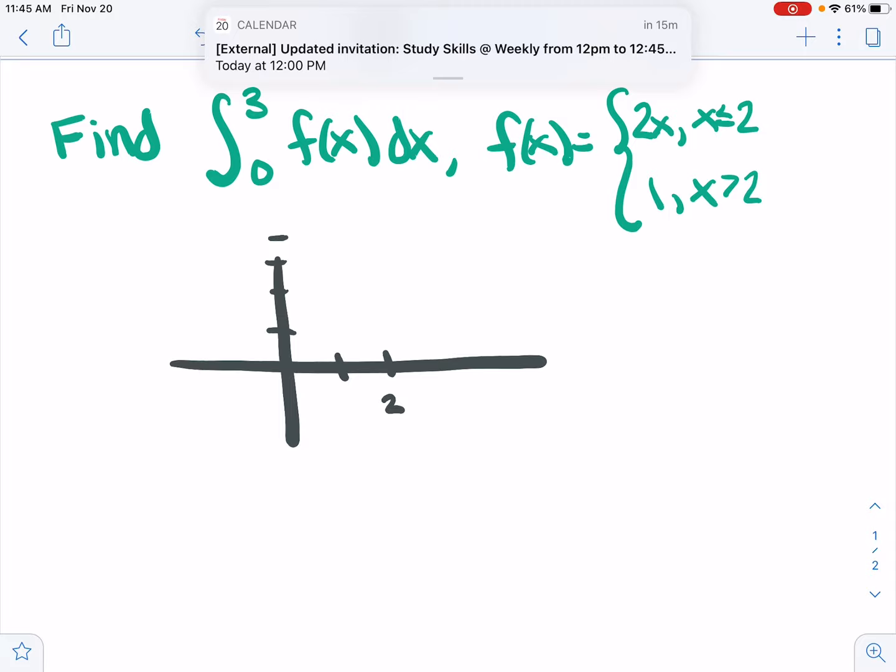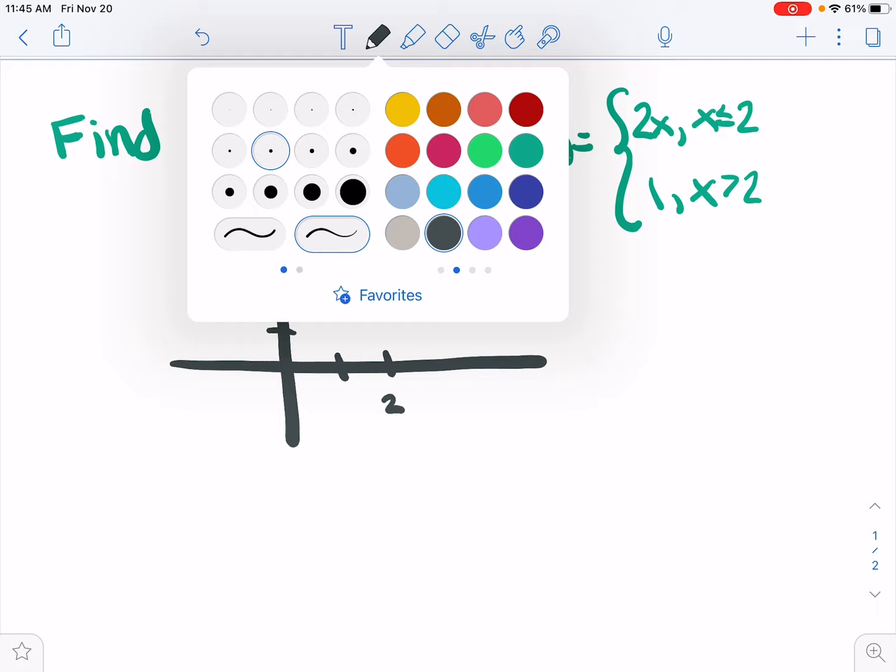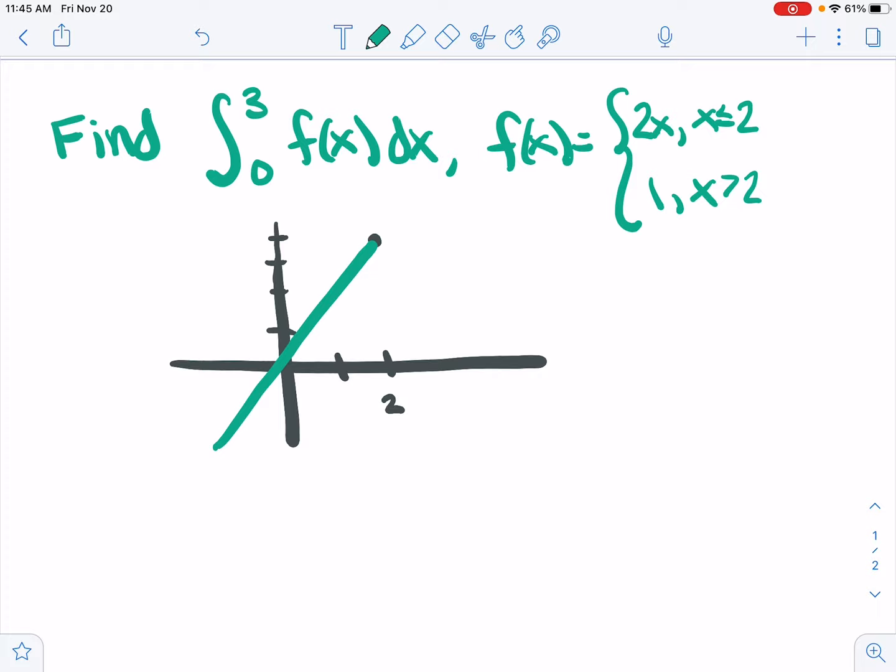That is a line with slope 2 through the origin, no intercept. So that's the function to the left of 2, and then to the right of 2, f(x) equals 1.